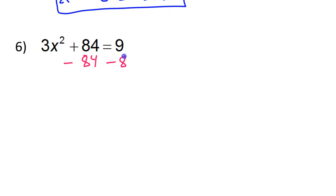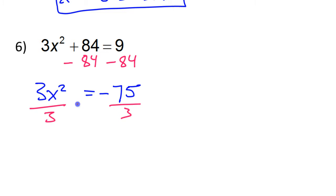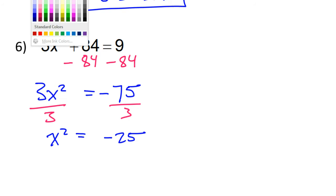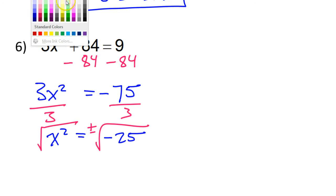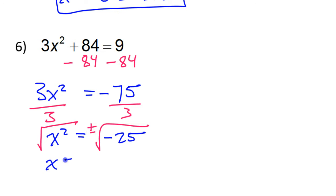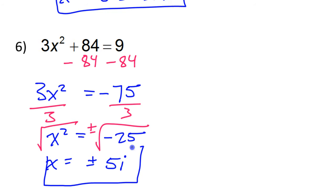On this one, we must first subtract 84 from both sides. That leaves us with 3x squared is equal to negative 75, and then we divide both sides by 3 to get rid of the 3. That's going to leave us with x squared is equal to negative 25. Time to take the square root — don't forget your plus or minus. So x is equal to plus or minus 5i. Square root of 25 is 5, and the negative makes it i.